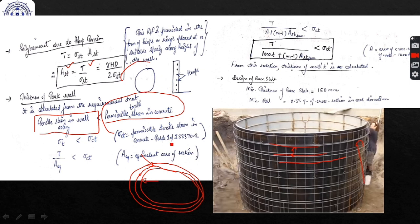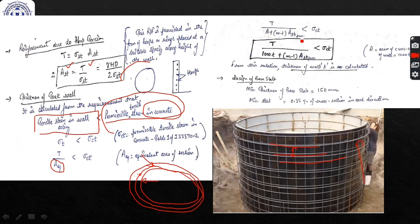The permissible tensile stress sigma_ct is obtained from Table 1 of IS 3370 Part 2 based on the grade of concrete. The direct tensile stress sigma_t = T / (equivalent area of concrete). The equivalent area is: A + (m-1)·Ast_provided, where A is the cross-sectional area of the wall (1000 × t) and (m-1)·Ast accounts for the reinforcement contribution.